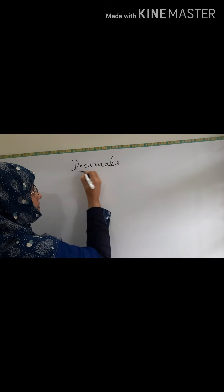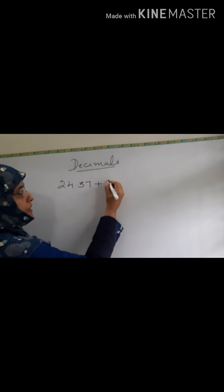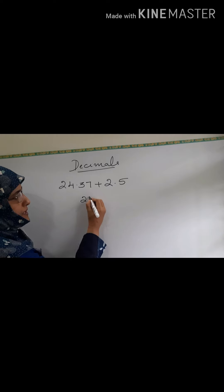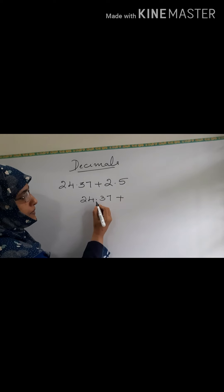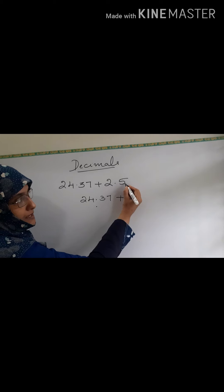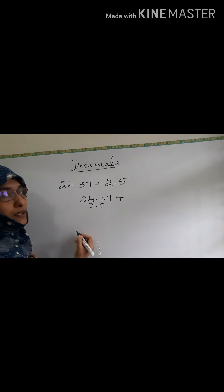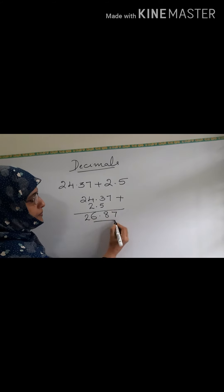Let us start with addition and subtraction of decimals. Do you remember how we add two decimal numbers? Take 24.37 plus 2.5. You want to add these two decimals. First you write the first number: 24.37. Then, put the decimal point first, then write the 5, and before the point it is 2. So write 2 here. Now add: 7, 5 plus 3 is 8, then 6, then 2.